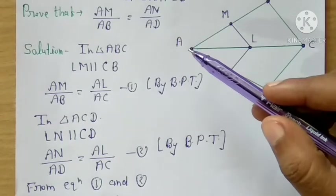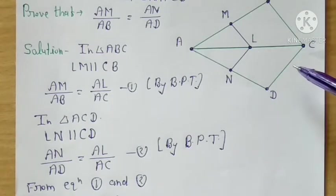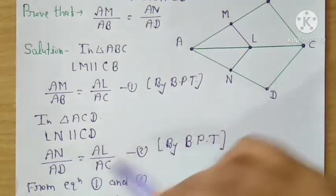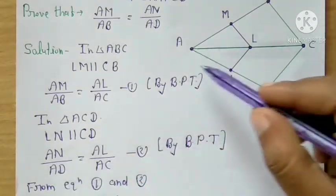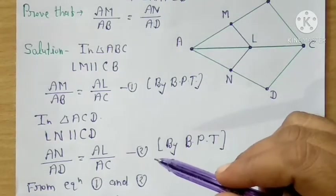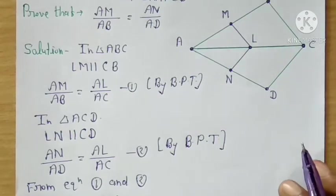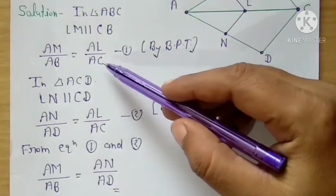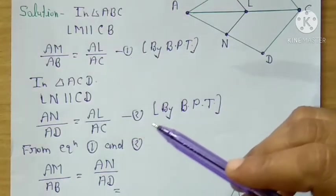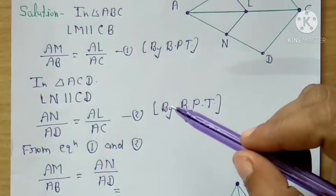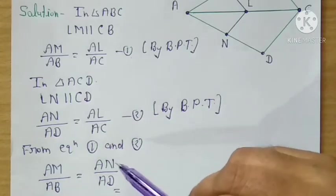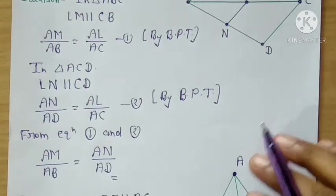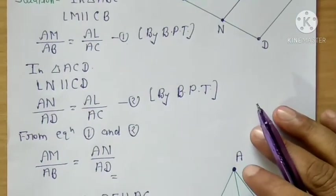The same procedure for the second triangle ACD. Here LN is parallel to CD. So by BPT, AN upon AD equals AL upon AC — equation 2. Now if we compare equation 1 and equation 2, in both we have AL upon AC on the right-hand side. Since the RHS of both equations is equal, the LHS must also be equal. Therefore AM upon AB equals AN upon AD — and this is exactly what we had to prove. Answer done.